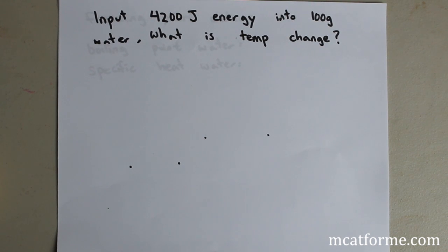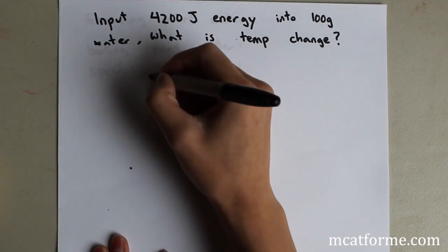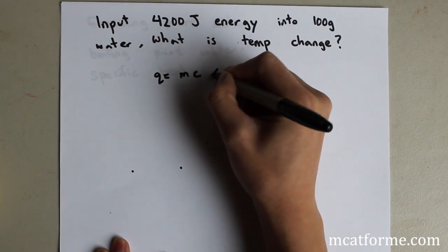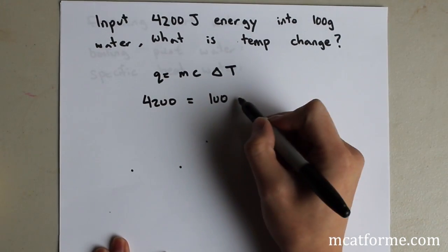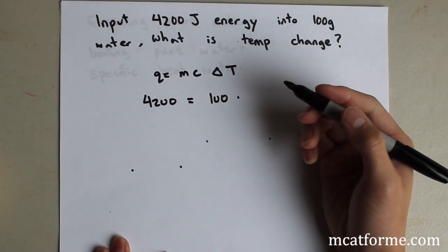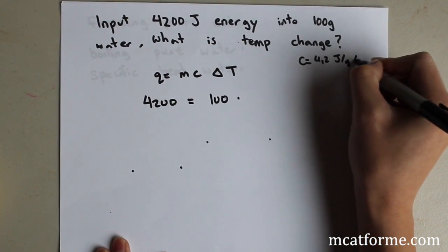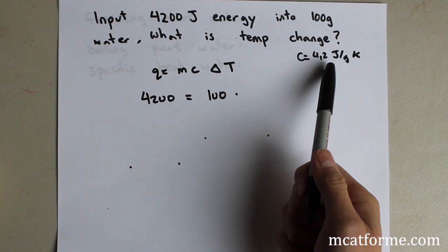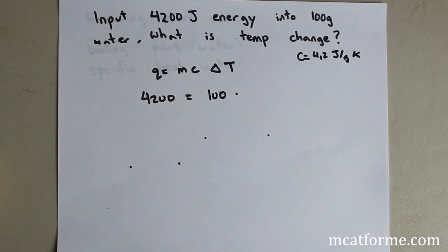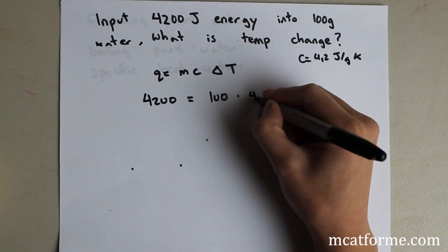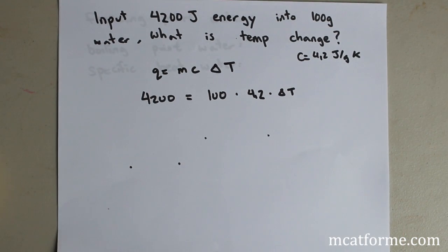Here's a simple example: 4200 joules of energy is input into 100 grams of water. What is the temperature change? Since this involves a temperature change, we use Q = mcΔT. Q is 4200, mass is 100, and the specific heat C for water is 4.2 joules per gram kelvin. Always keep track of whether values are given in joules or kilojoules, and grams or kilograms — a mix-up will throw you off by a factor of a thousand. Plug in 4.2 for C and solve for ΔT.